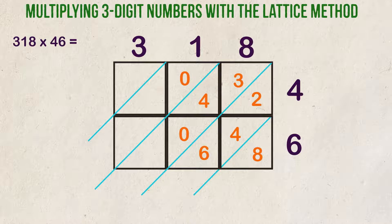Finally, the far left column. Three times four is 12. We fill in those digits like this, and three times six is 18, so we put the one here and the eight here.